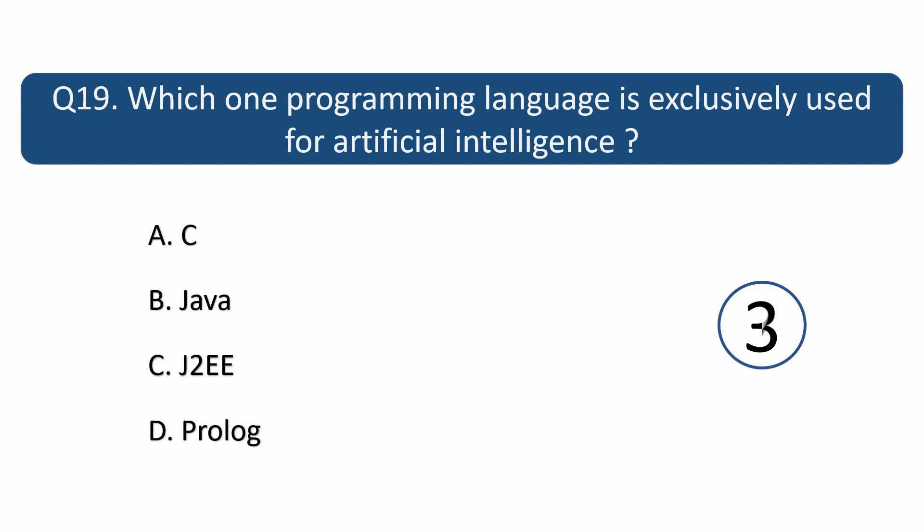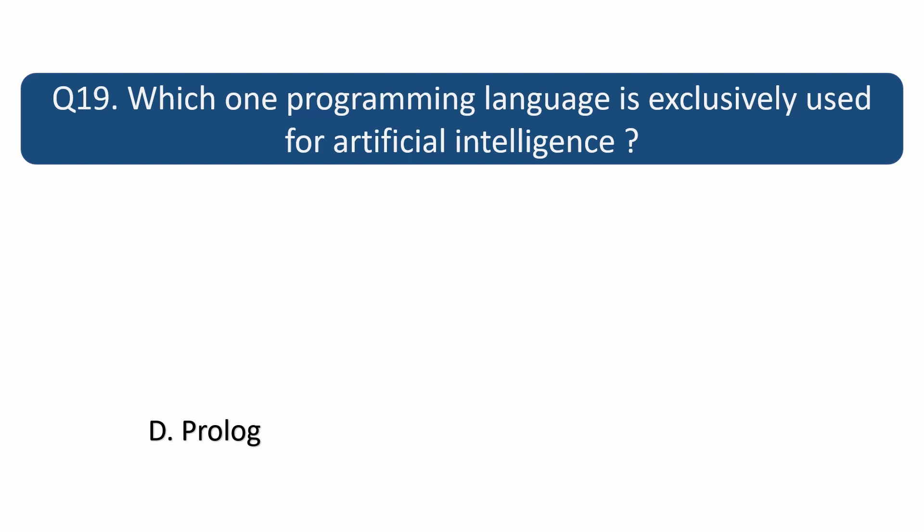Question number 19. Which one programming language is exclusively used for artificial intelligence? Answer is D. Prologue.